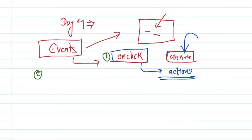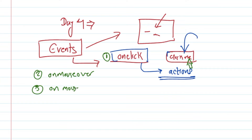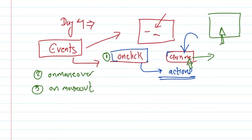The second event is onmouseover — this is very useful. The third event is onmouseout. For example, if you hover over a button, onmouseover triggers. When you move the mouse away, onmouseout triggers. You can see this demonstrated practically, similar to examples on W3Schools.